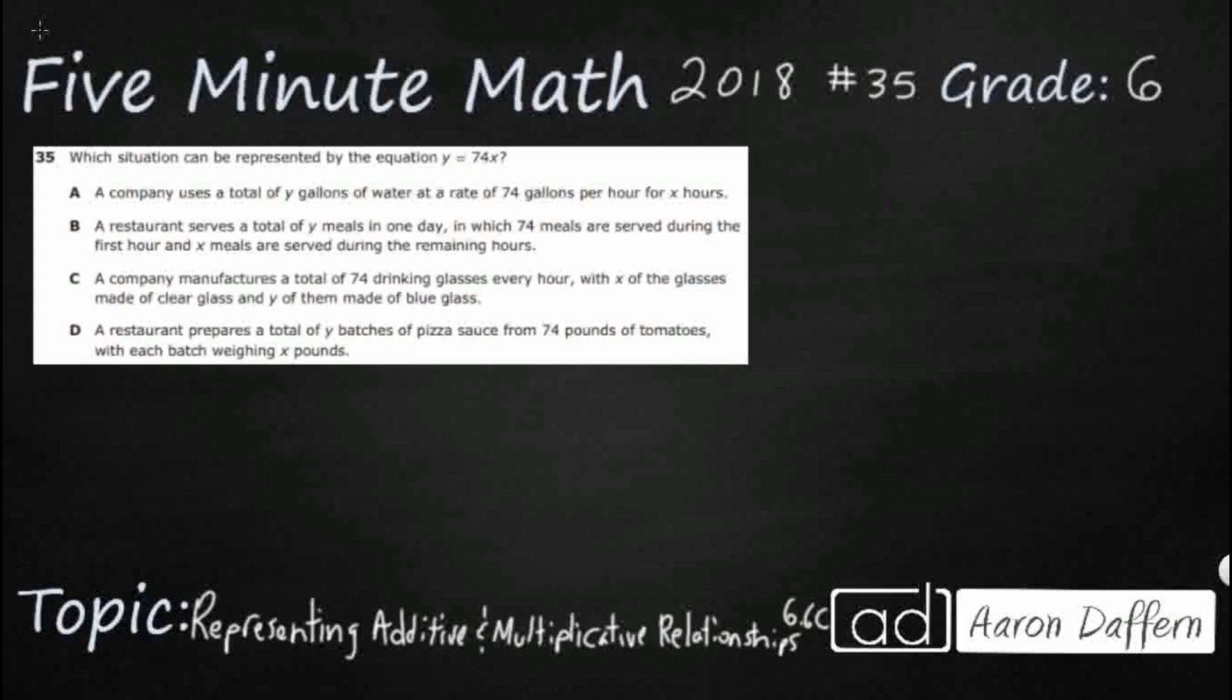So in this problem, they actually give us the equation y equals 74x, and this is a multiplicative relationship. We know that because it has a number, 74, right next to a letter x, and there's no operation in between. Whenever you see a number next to a letter that represents a variable, that means multiply. So we're going to multiply 74 times x.